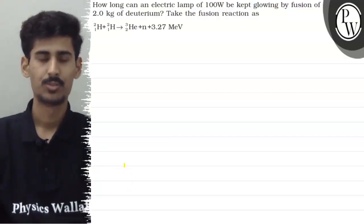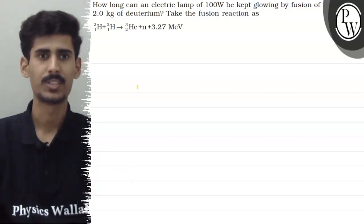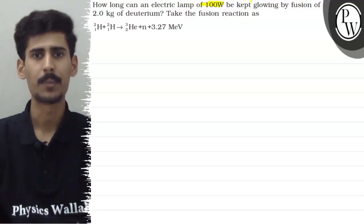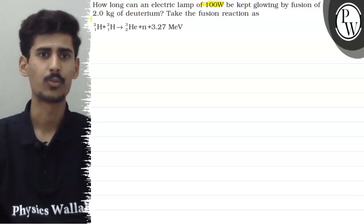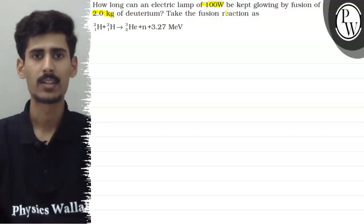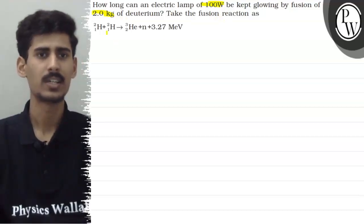Hello, children. So, let's see this question. The question says: how long can an electric lamp of 100 watts be kept glowing by the fusion of 2 kg of deuterium? Take the fusion reaction as followed.